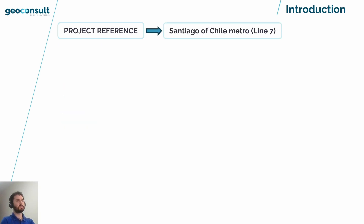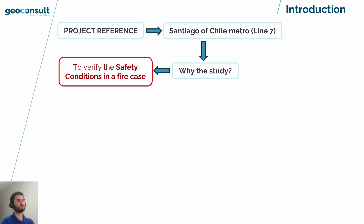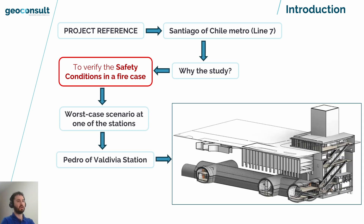The project that has been considered as reference is the study of Santiago of Chile metro. This is a metro station where it was necessary to check that in the event of a fire it met all the requirements for the evacuation routes to be safe during the evacuation time. The reason to make this study is related to verify the safety conditions in a fire case. This will confirm that the ventilation strategy is installed correctly. For the study development, the worst case will be considered — Pedro Valdivia will be the metro station object of this study. You can see an example of the 3D model of the Pedro Valdivia station.